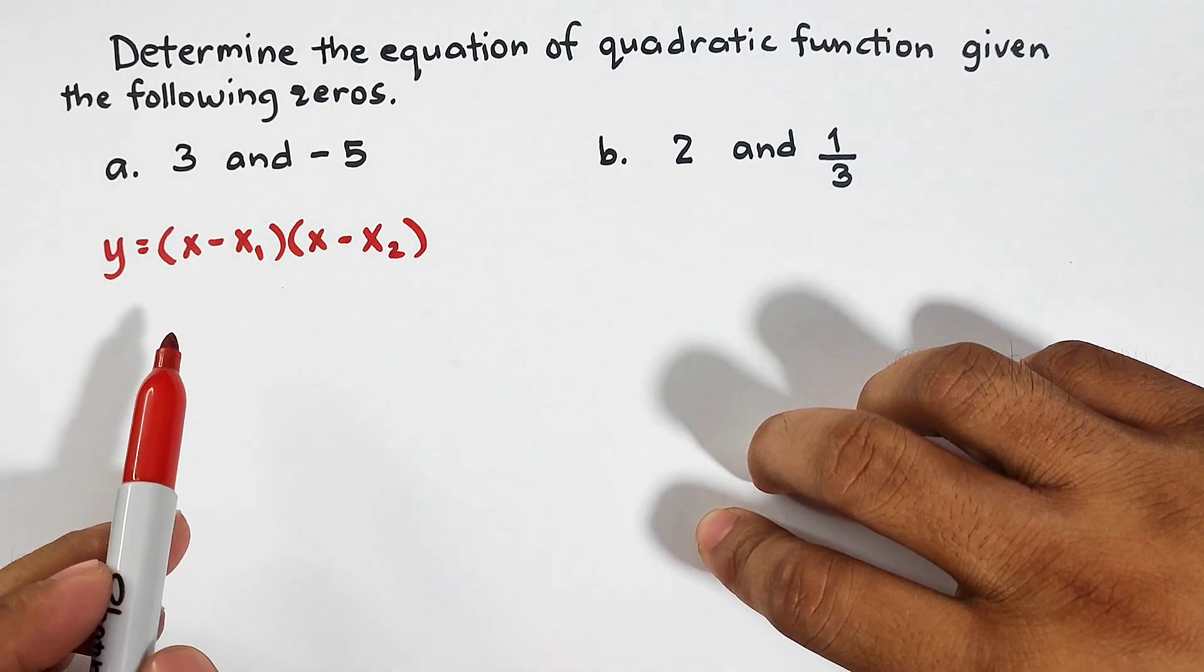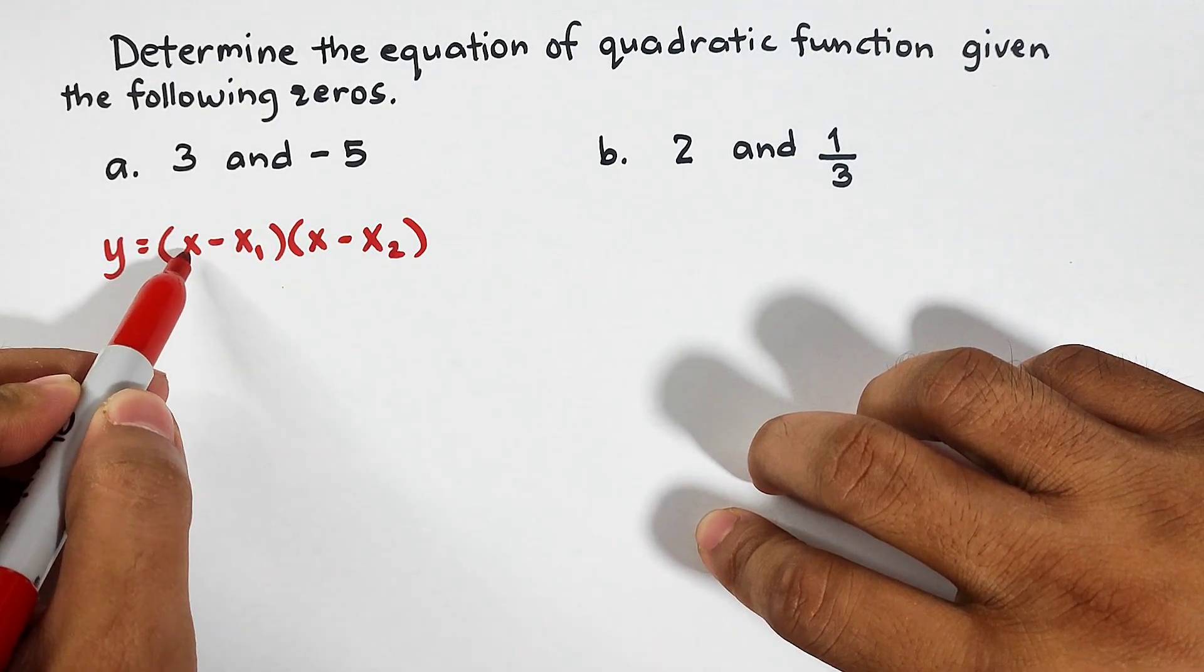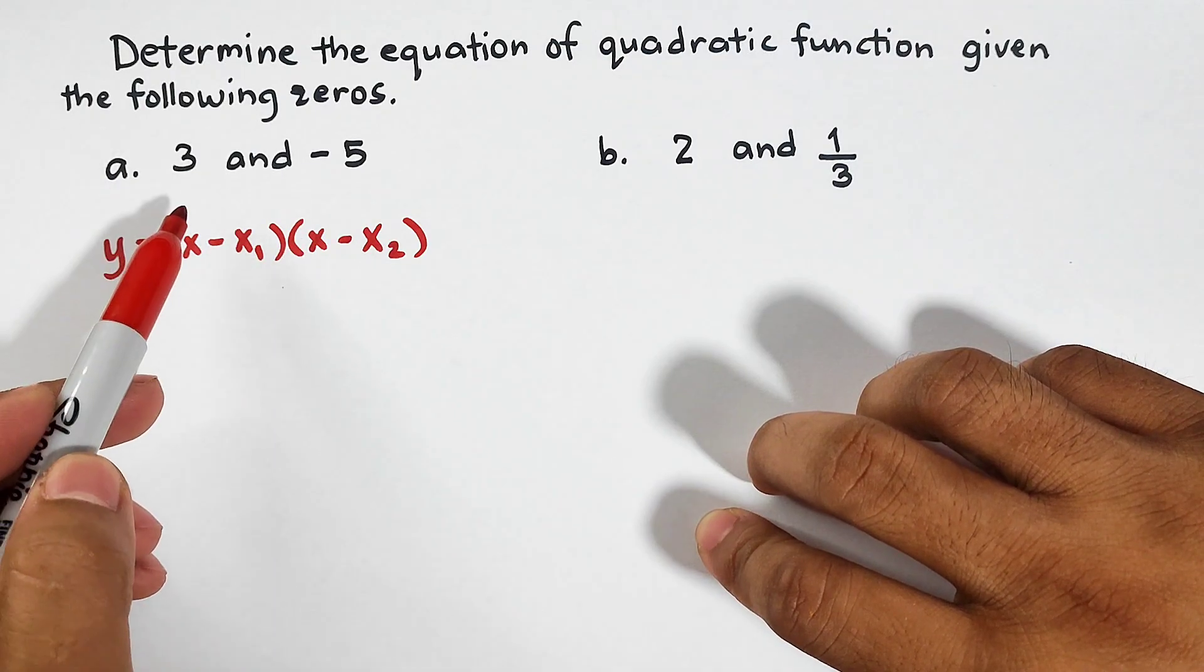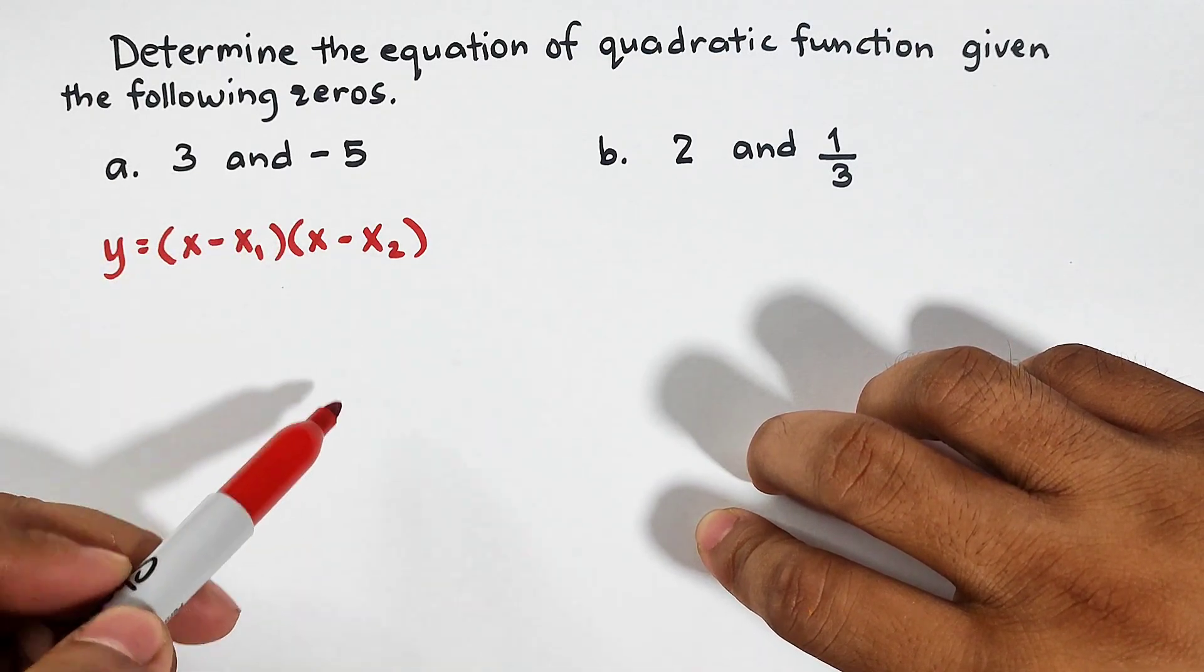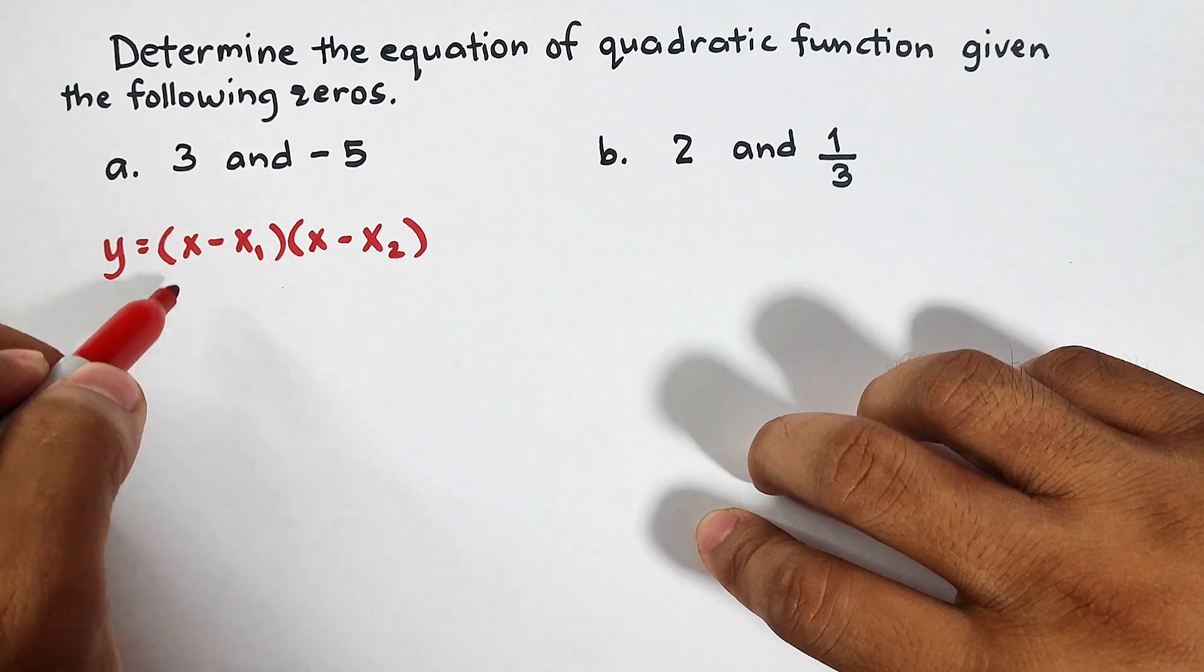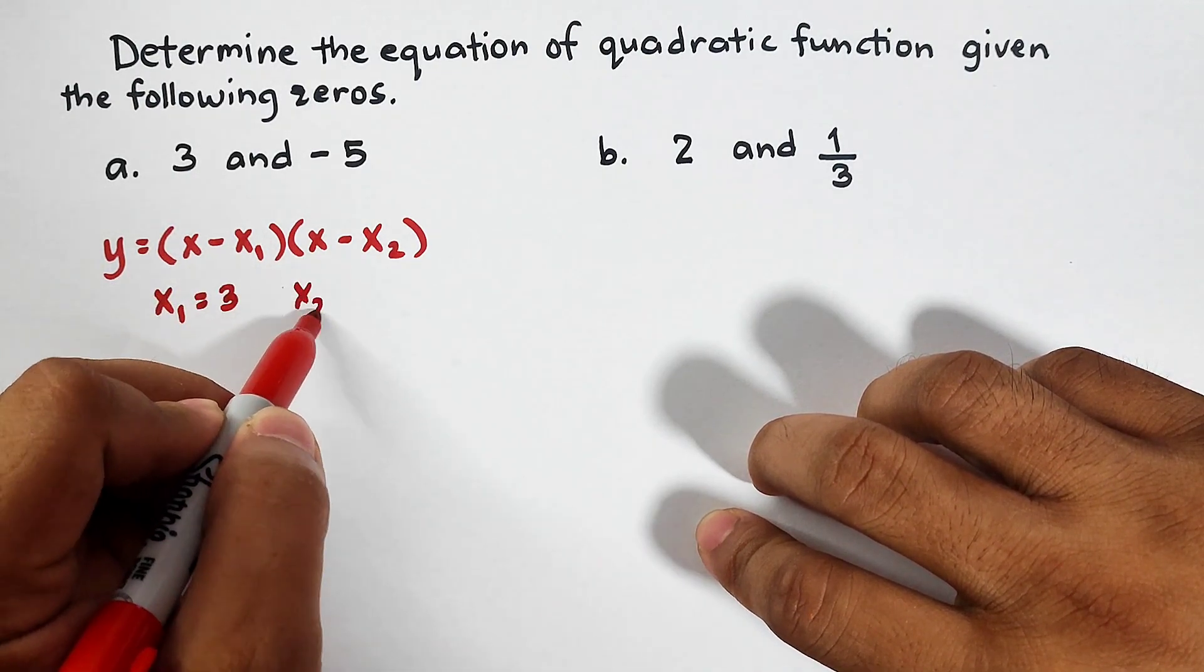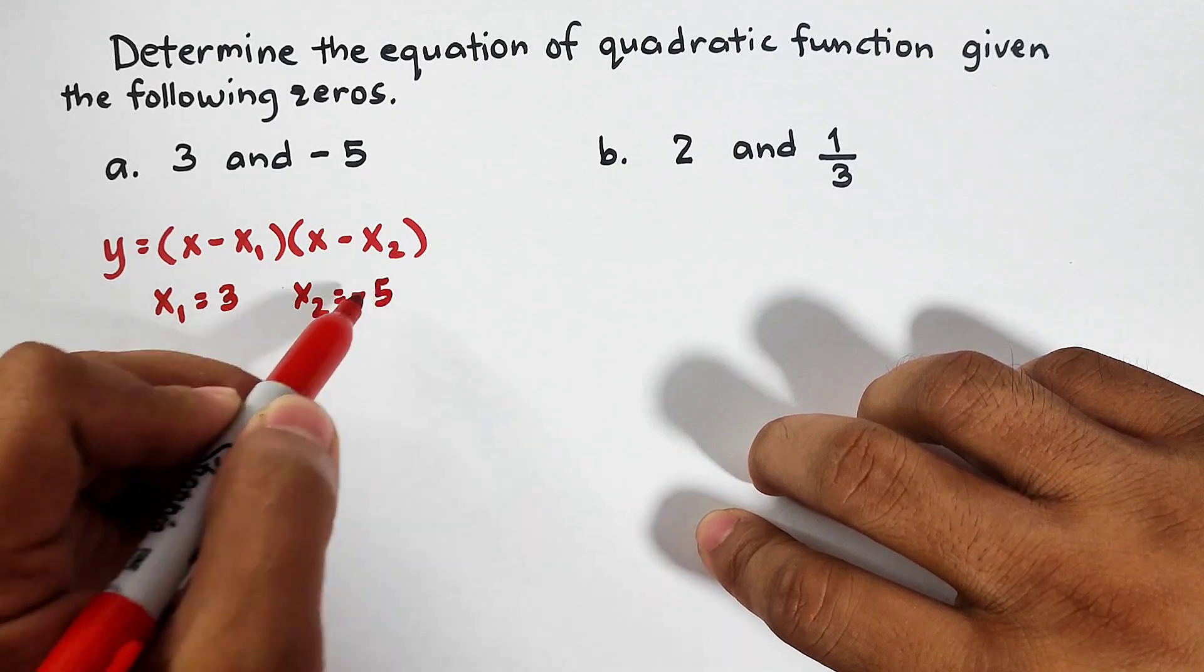Here, in our given formula, what we have are x, x sub 1, x, and x sub 2. For the zeros 3 and negative 5, your x sub 1 is equal to 3, your x sub 2 is equal to negative 5.